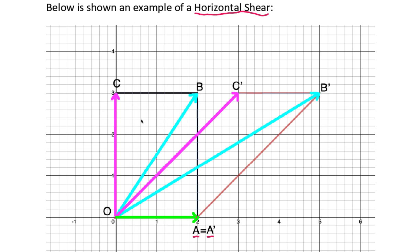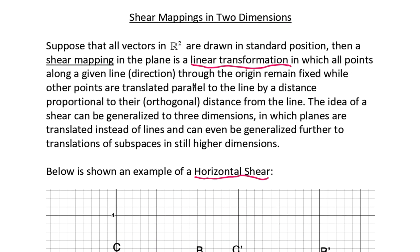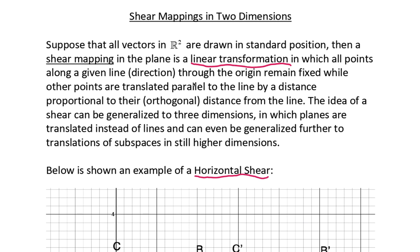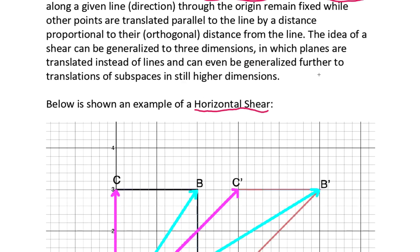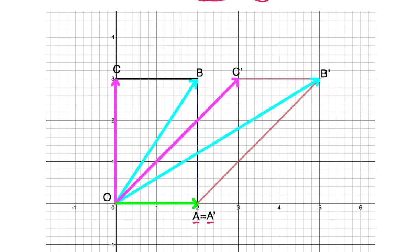Because this is a horizontal shear, this is not going to change vectors in the I direction. So vectors in the I direction will remain unchanged. You can think of it this way: all points along the X axis, that's the given line through the origin, remain fixed. That's why in this particular transformation, you notice that A and A prime are identical. And likewise, the origin stays the same because it lies along the X axis here.